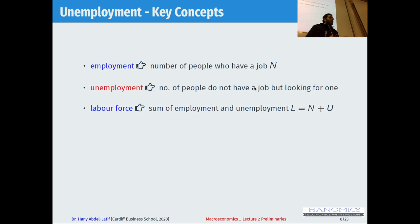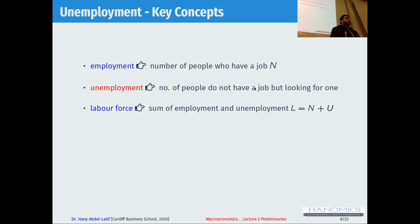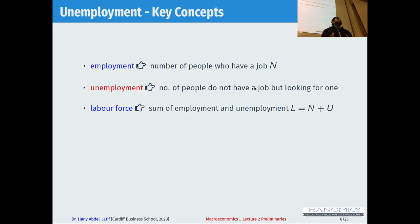So L — the labor force — is N plus U: the number of people employed plus those who are not employed but looking for a job. That means the labor force includes both those who are employed plus those who are able to take a job and are looking for one. When we talk about those who are able to take a job, we basically exclude young people like children and those who are maybe above 65 — those outside the working-age population.